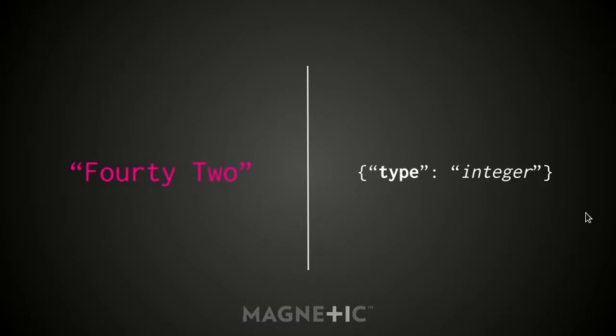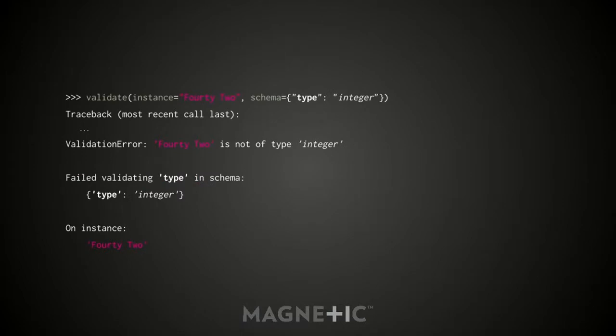Here's an instance that's not going to be valid because that string is clearly not an integer. You pass it in and get a longer-looking traceback. It possibly looks scarier than it is. We get a ValidationError: '42 is not of type integer.' At the top is the most human-readable description of what went wrong, with more context about what was happening during validation — which validator was being used, on which instance. In a simple case it's not very useful, but as things get more complicated it becomes more interesting.